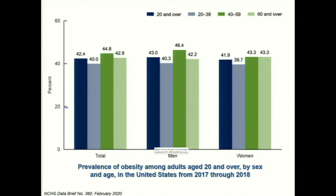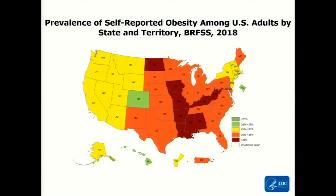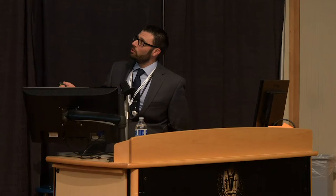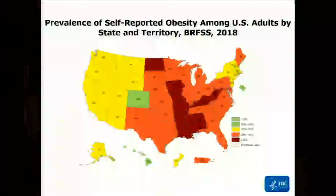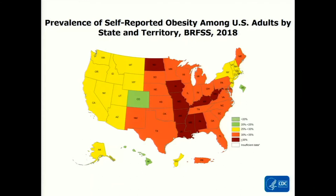Breaking it down by sex and age, it's about 40 percent across the board — very alarming. Looking at the map across the country, there's a lot of yellow out west. Colorado seems better, but it's cold there. By 2018, at least five states were added in red, meaning greater than 35 percent obesity. As you move out west there may be a bit less obesity, especially compared to the Midwest.